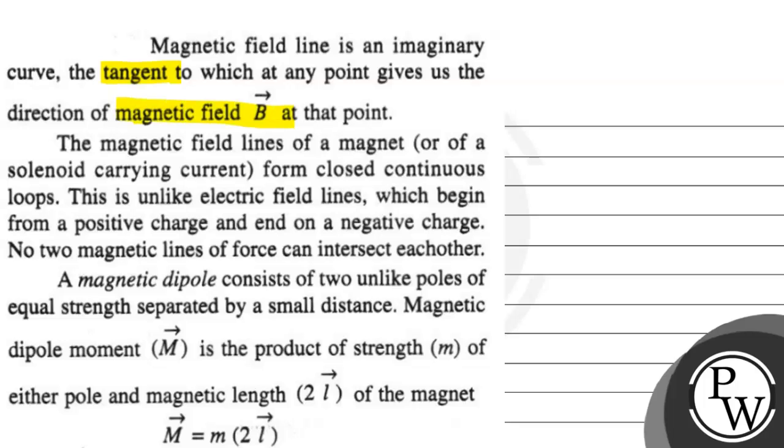The magnetic field lines of a magnet or a solenoid carrying current form closed continuous loops. This is unlike electric field lines, which begin from a positive charge and end on a negative charge. No two magnetic lines of force can intersect each other.